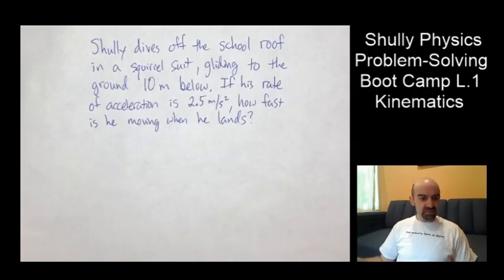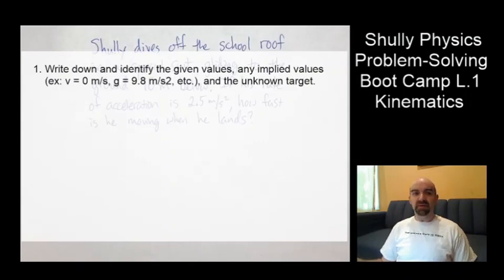So our first step is to write down and identify the given values, any implied values and the unknown target, write them down. It might seem like a waste of time, but it is probably the best use of time you can have ever. It helps you to get started and also to minimize the errors that you might make. All right. So we're going to identify given values, implied and the unknown. And in this problem, we've got all three of those.